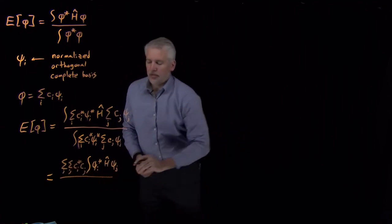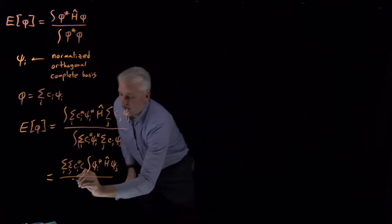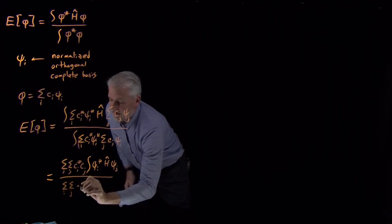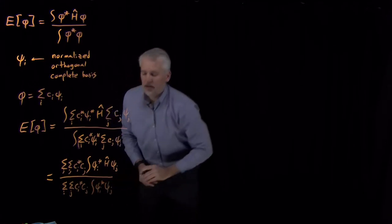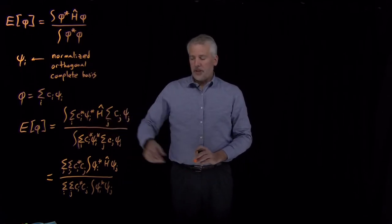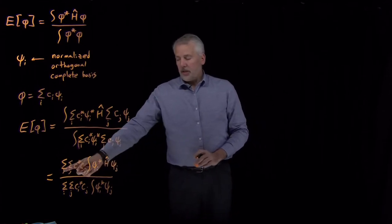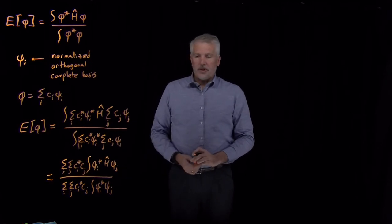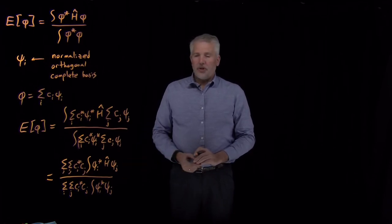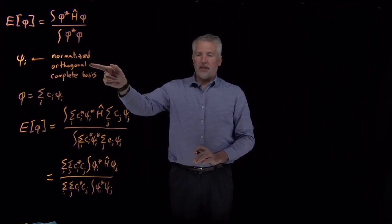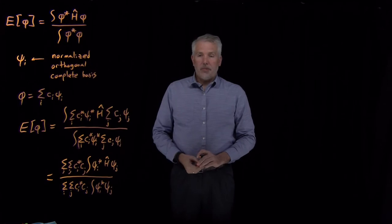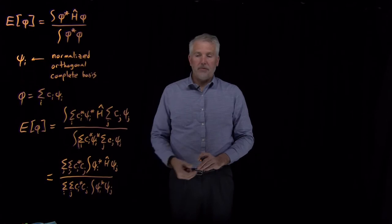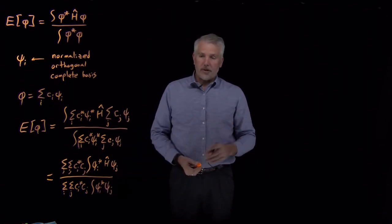In the denominator, very similarly, just without the Hamiltonian: sum over i and sum over j pulled out of the integral, ci star, cj, integral of psi i star times psi j. All I've done in that step is rearrange the order of the sums and integrals. Now that I've got it rewritten in this form, we can see that we already know the answer to some portions of this integral. If a wave function is normalized and orthogonal to all the other wave functions, then the integral of one wave function times another is either going to give me a one or a zero, depending on whether i and j are the same number. The integral of the ground state wave function times itself gives one; times a different wave function gives zero.